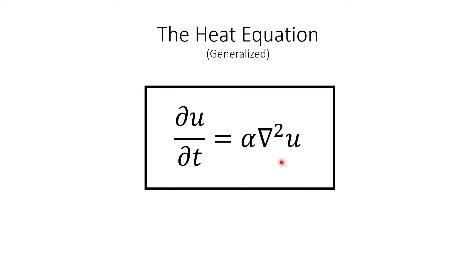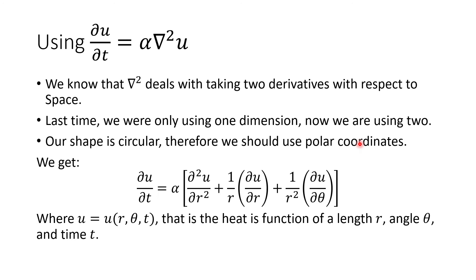What we're looking at here is heat transfer. Like last time, the partial derivative of heat with respect to time equals two partial derivatives of heat with respect to space. Here we're saying the same thing, but because we're in two dimensions we are using a differential operator to the second degree - taking two derivatives with respect to space. Since we're dealing with a circular shape, we need to use polar coordinates. That gives us an equation where one derivative with respect to time equals the diffusivity times two derivatives with respect to the radius, plus one over r times one derivative with respect to the radius (these are partial derivatives), plus one divided by r squared times the heat with respect to the angle.